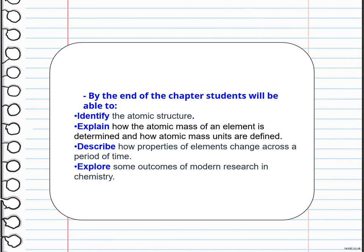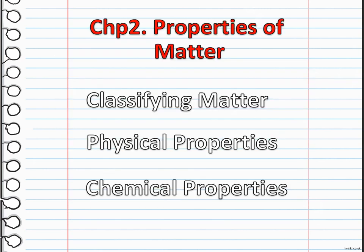We are also going to explore some outcomes of modern research in chemistry. Starting the unit with Chapter Two, Properties of Matter, we are going to talk about classifying matter, physical properties, and chemical properties. Take into consideration that this topic was mainly explained in grade six, revised in grade eight, and now we are covering it again in grade nine — these are basic chemistry knowledge.